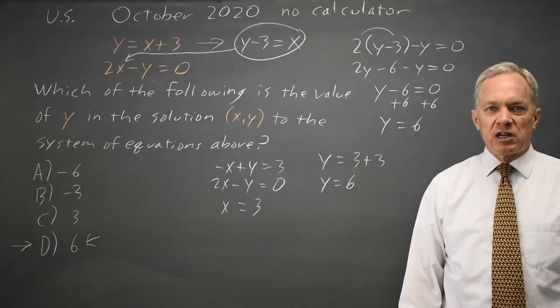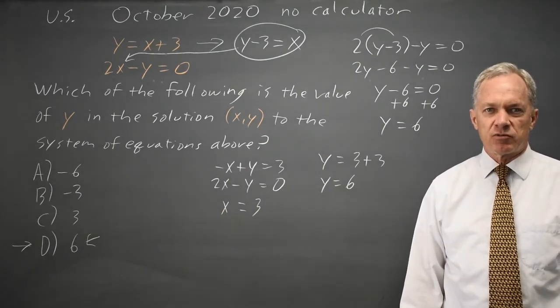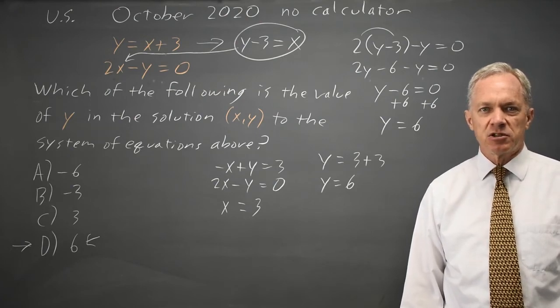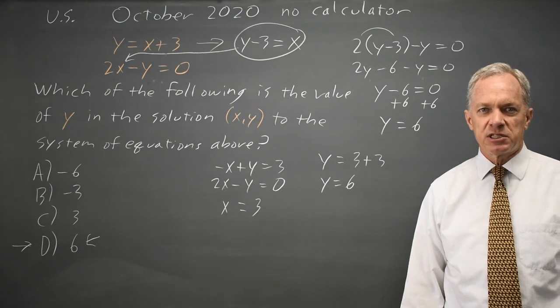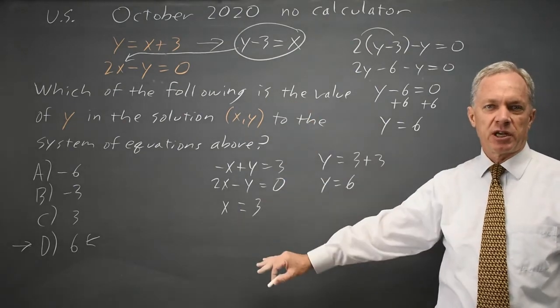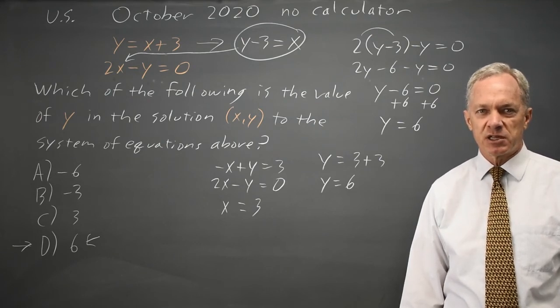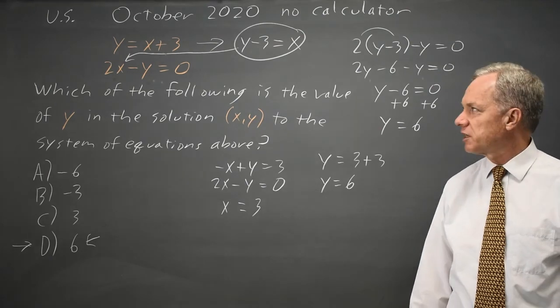College Board often asks systems of equations. You should expect 4 or 5, perhaps even 6 of them on your SAT, so make sure you're very good at these. I would suggest when you do one in a practice test, you go back after your time is up and redo the system of equations using a different method so you stay proficient at a variety of methods.